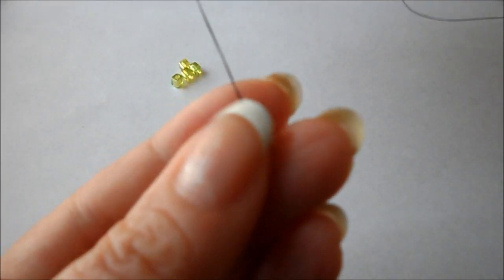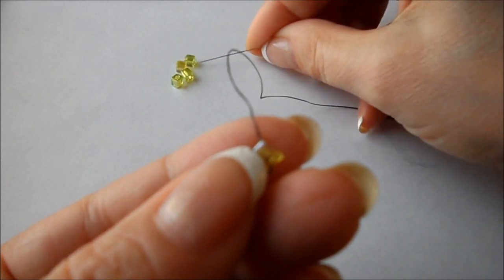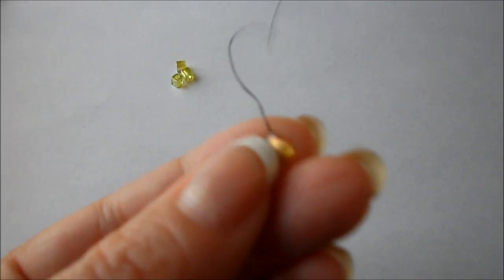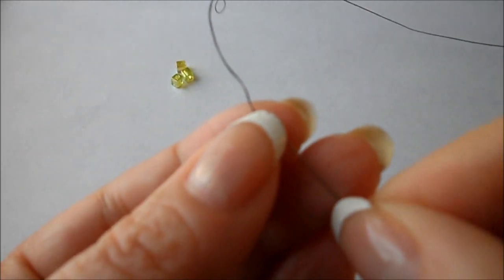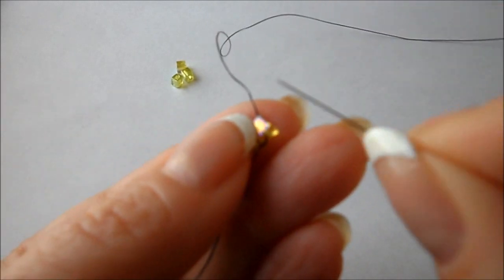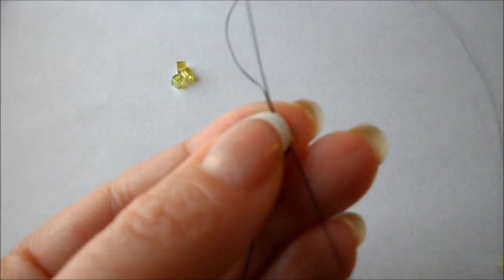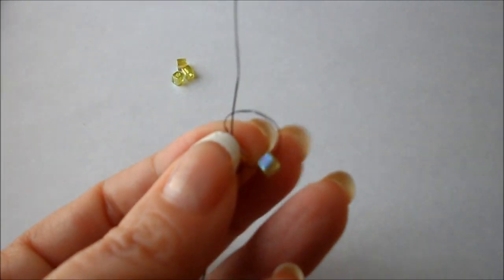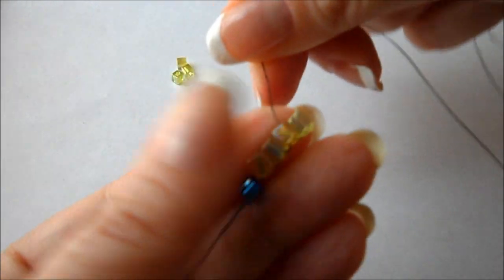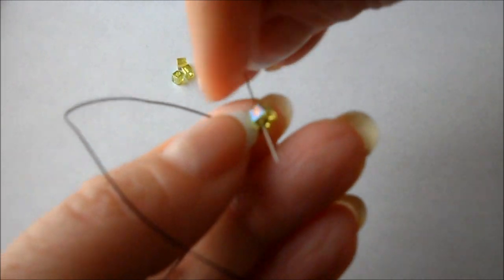Continue this pattern. Pick up a bead, bring it down, and go through in the opposite direction from where your thread is coming out. Tighten, which stacks it, and then go right back through the bead you just put on.